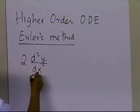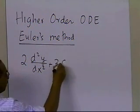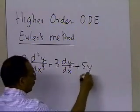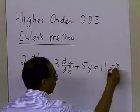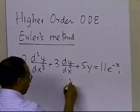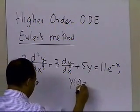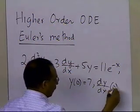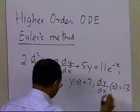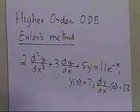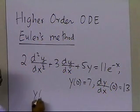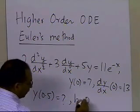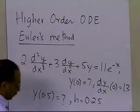Suppose somebody gives you a second-order differential equation and wants you to solve it to find y as a function of x. You are given the initial conditions that y at 0 is 7 and the first derivative of y at 0 is 13. You are asked to find y at 0.5, given that the step size is 0.25.